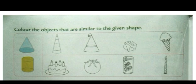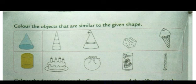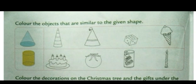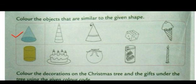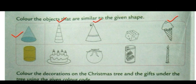So scholars, now we move on to the next page — page number 80. See the exercise given here: Color the objects that are similar to the given shape, as we have done on page number 79. The first shape is of a cone. Tell me which objects are similar to the given shape — this one, this one, and this one. So we will color them accordingly. You can use any color to color it properly.